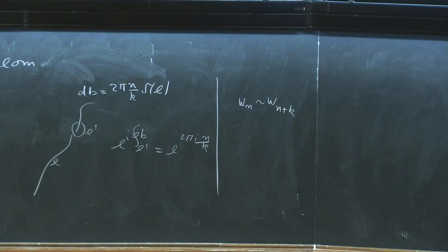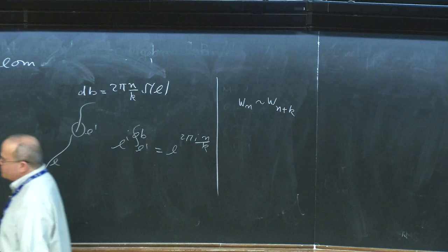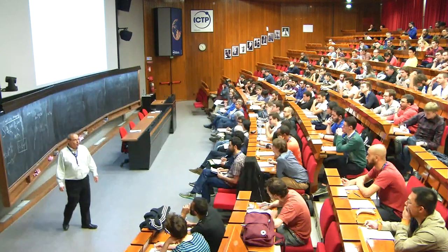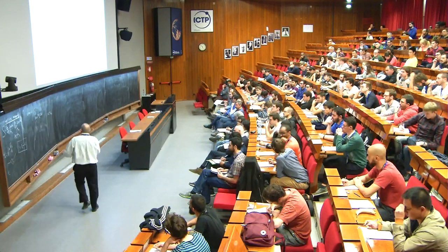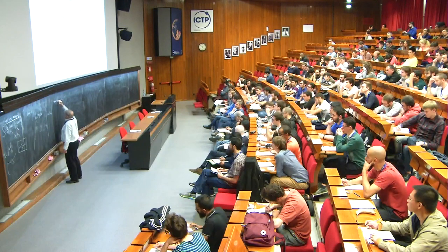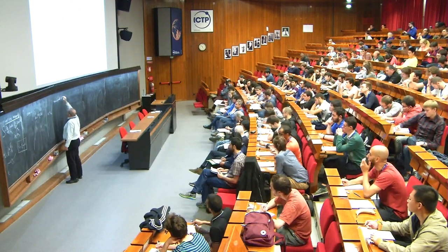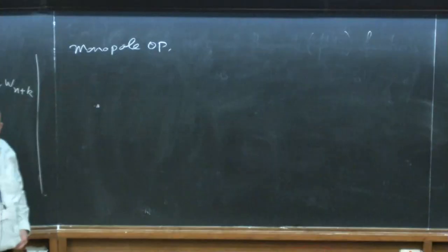One might say we don't need to allow all possible N's, because some are related by this identification. How many lines are there given this? That's almost the right answer, but it was a trick question. In order to understand it better, I want to introduce another notion — the notion of a monopole operator. Let's put this aside and define a monopole operator.